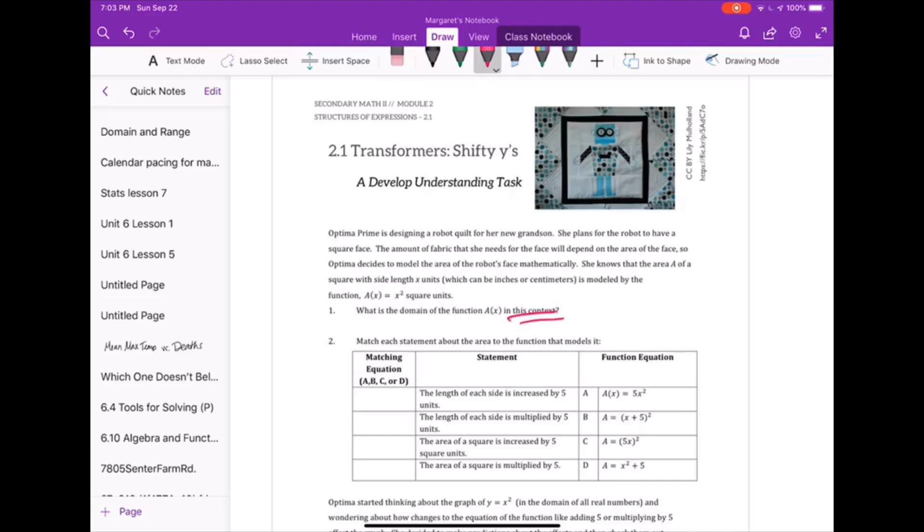If we read the context here, we found that we are building a quilt that is a square where a of x equals x squared. That means on this quilt, we have an x times an x. So the area is x squared.